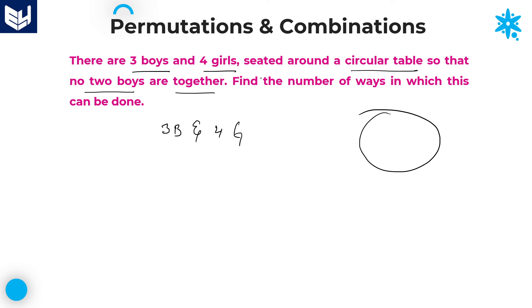According to the condition, no two boys are together. If you want no two boys to be together, first of all you need to arrange the girls first. Here girls are four members. These four girls initially can be arranged in 3 factorial ways only, because four girls in a circle can be arranged in (4 minus 1) factorial, that is 3 factorial ways.